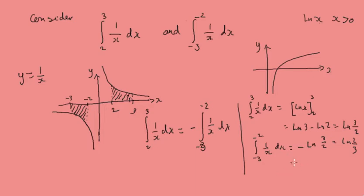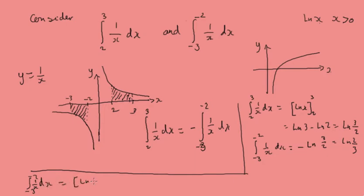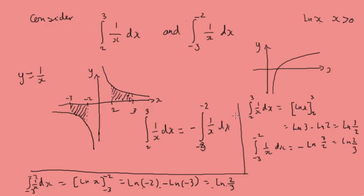If we try to actually integrate this directly, we get log x evaluated between minus 3 and minus 2, which gives log(minus 2) minus log(minus 3), which would be log(2/3). But there's a problem — what we've just done doesn't actually exist, because log(minus 2) doesn't exist and log(minus 3) doesn't exist, since log is only defined for x greater than 0.